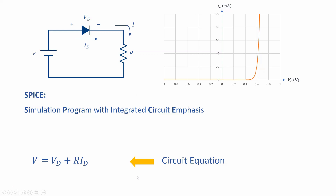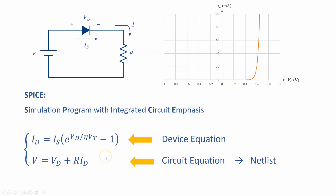We don't write the equations, but we create a netlist which describes how the terminals of different components are connected together. Another part is the relationships between the current and voltage of the devices. For example, in a resistor, current and voltage are related by Ohm's law. In a circuit with a diode, the relationship is an exponential relationship between diode current and diode voltage. These definitions are defined as a model.